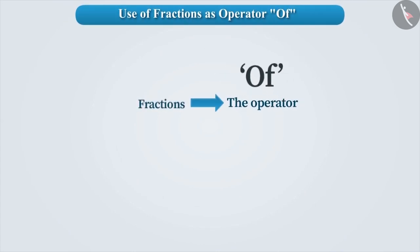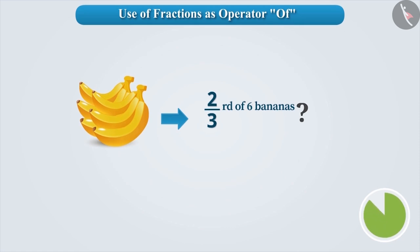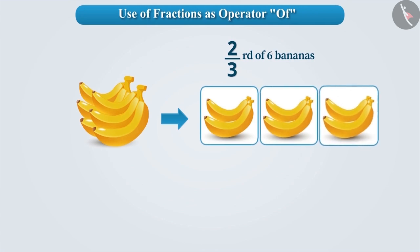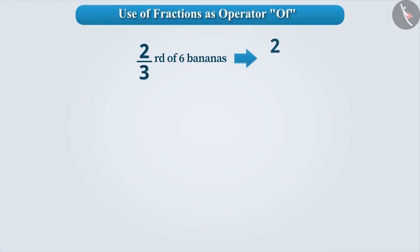Fractions are also used in the form of the operator of. There are 6 bananas here. Can you guess what will be 2 third part of these 6 bananas? We first have to divide 6 bananas into 3 groups and take out 2 of these 3 groups. Hence, 2 third part of 6 bananas is 4 bananas. We can also express this as multiplication: 2 third part of 6 bananas is equal to 2 third multiplied by 6.